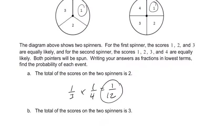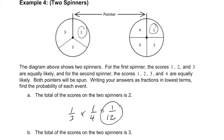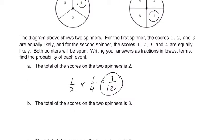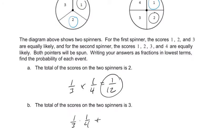The total of the scores on the two spinners is 3. So what could happen? You can get a 1 and then a 2. So that's the first way, 1/3 times 1/4. Or, trying to get a 3, you can get a 2 and then a 1, which is also another 1/3 times 1/4.